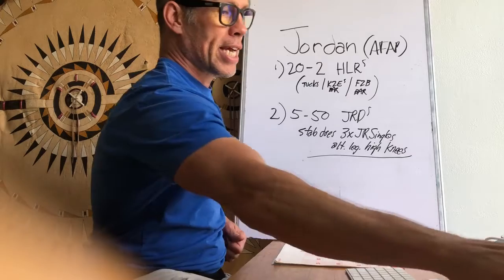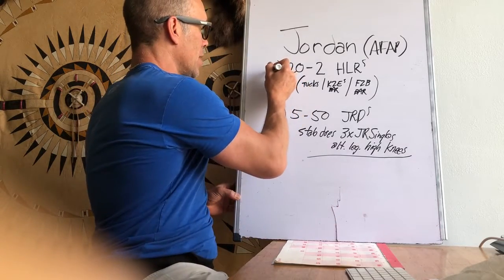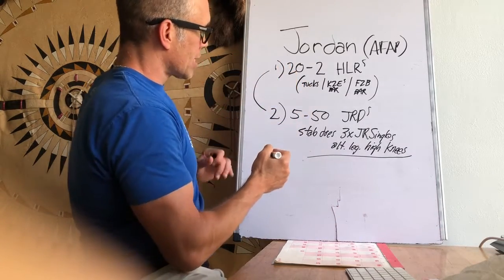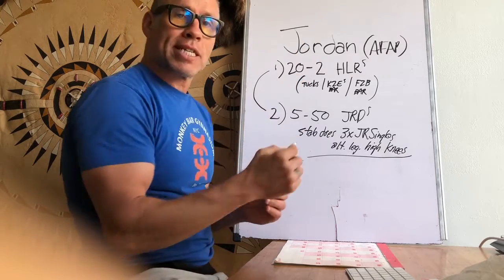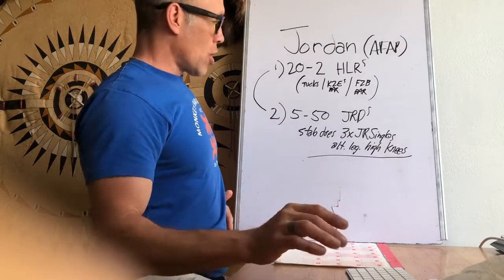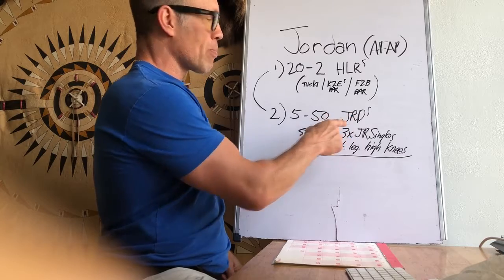But you're going to alternate it. So whenever you see this happen, where your line is drawn to connect the two, that means you're alternating the two exercises. So the second exercise is jump rope doubles.